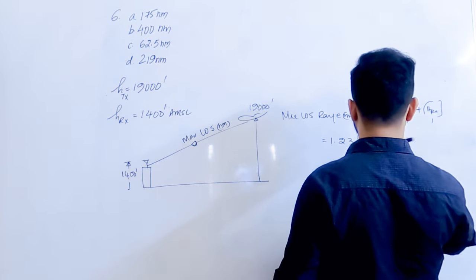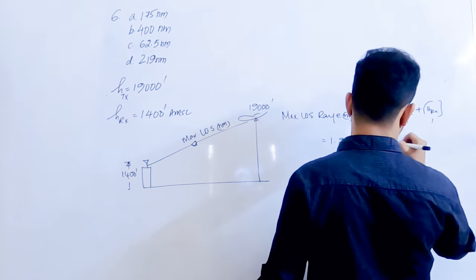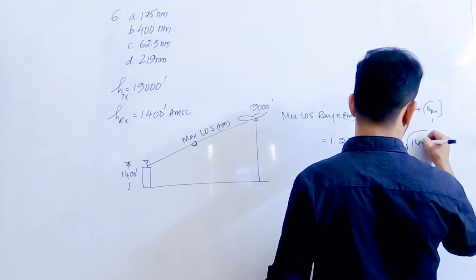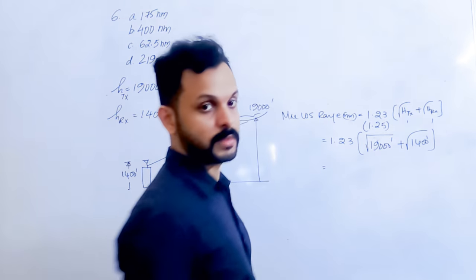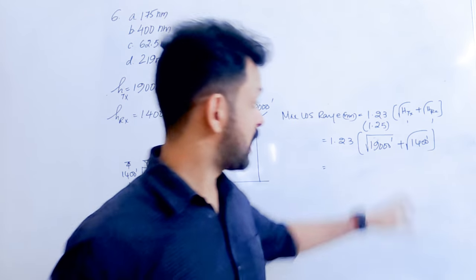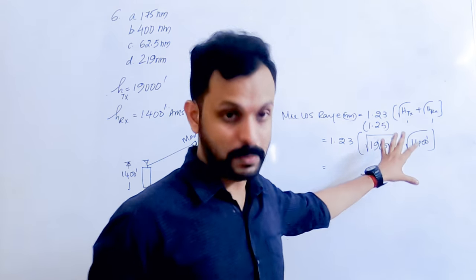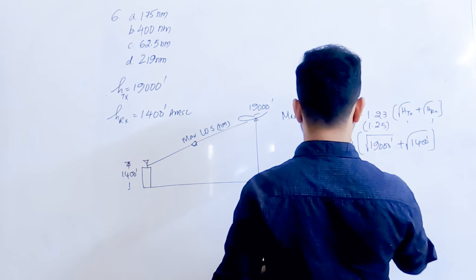Which is 1.23 times, what is the height of transmitter? It is 19,000 feet. Height of receiver is 1,400 feet. Make sure you do not add them together first and then find the root. Find the square root separately and then multiply by 1.23.